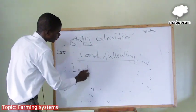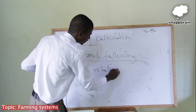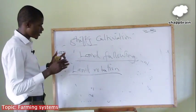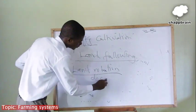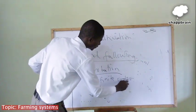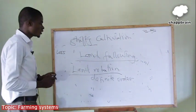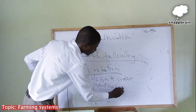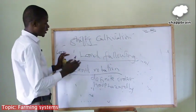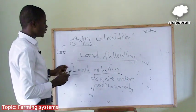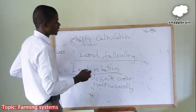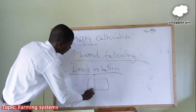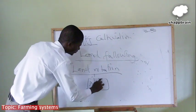We also have land rotation. When we say rotation, we mean that you move something in a circular manner but in a definite, precise order. In land rotation, the farmer has different plots of land — plot A, plot B, C, and D.